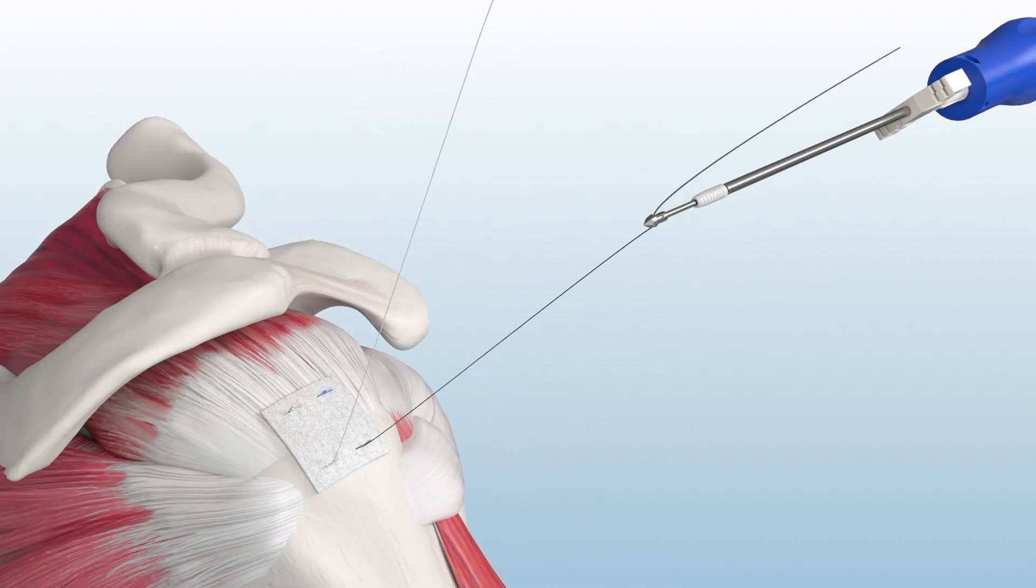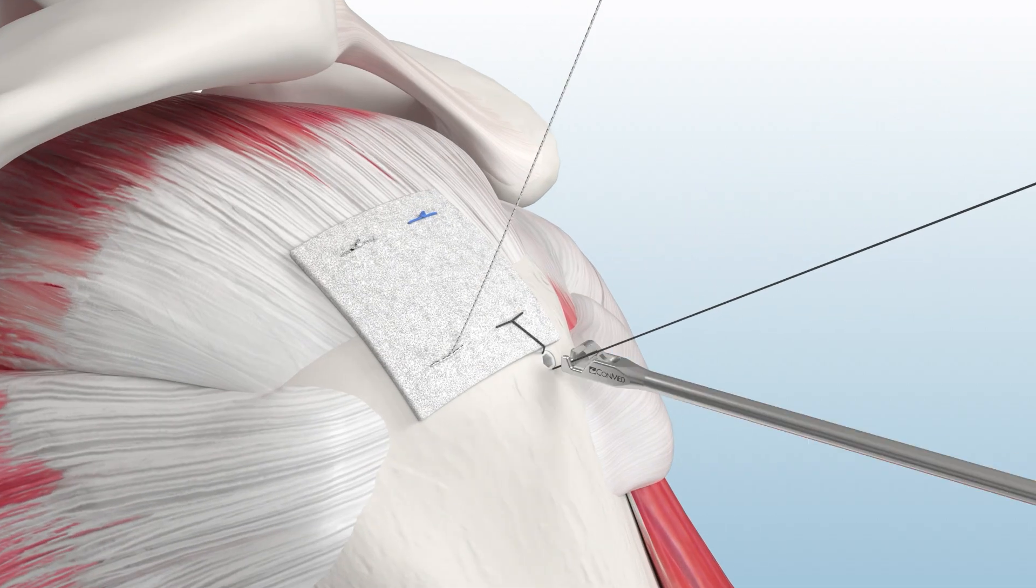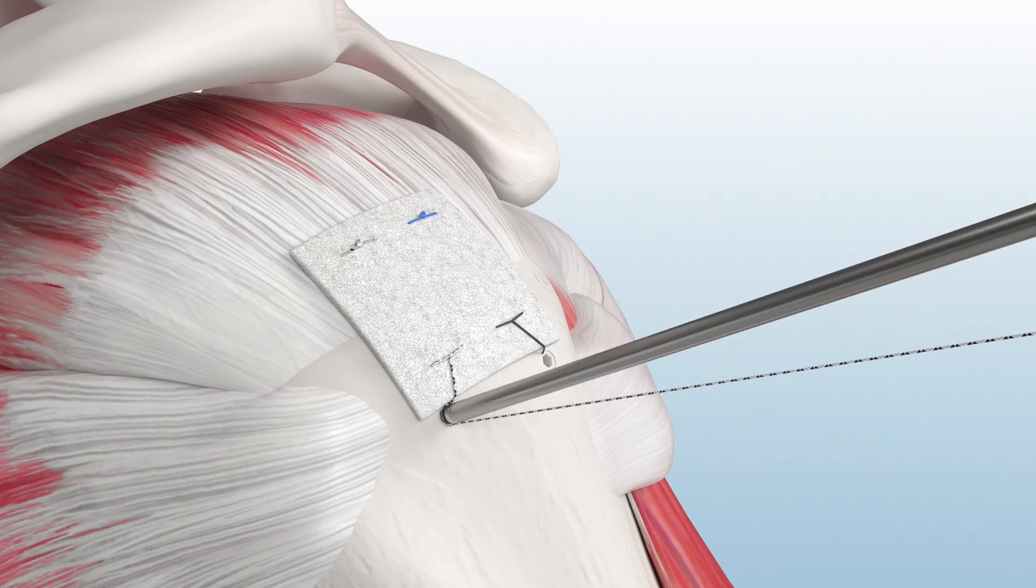Finally, secure each lateral suture limb using the Argo Knotless Genesis self-punching suture anchor to complete augmentation of the rotator cuff repair.